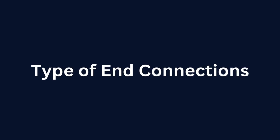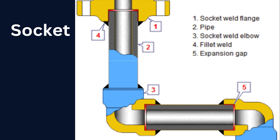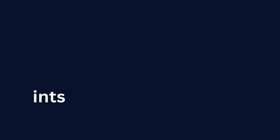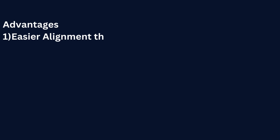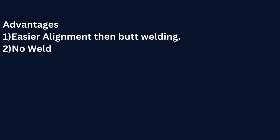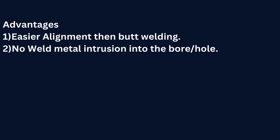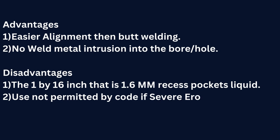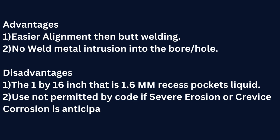Types of end connections — pipes can be connected by the following ways. Socket weld pipe joints: in socket weld pipe joints, the pipe will fit inside the socket fittings. As shown in the figure, you can refer to the socket weld flange, pipe, socket weld elbow, and fillet weld along with expansion gap. Advantages: 1. Easier alignment than butt welding. 2. No weld metal intrusion into the bore. Disadvantages: 1. The 1/16 inch recess pockets liquid. 2. Use not permitted by code if severe erosion or crevice corrosion is anticipated.